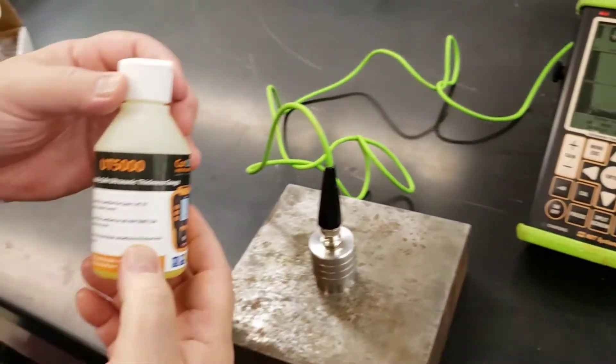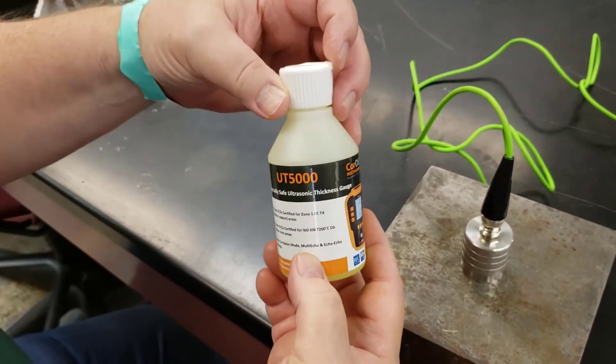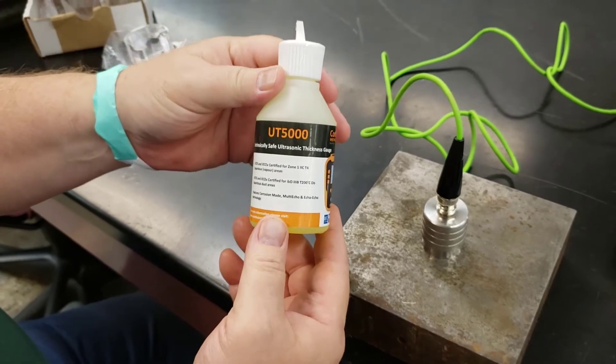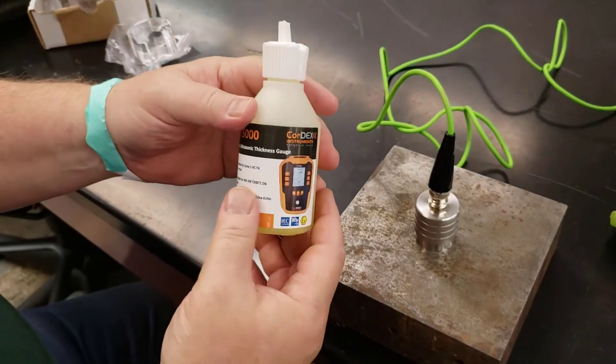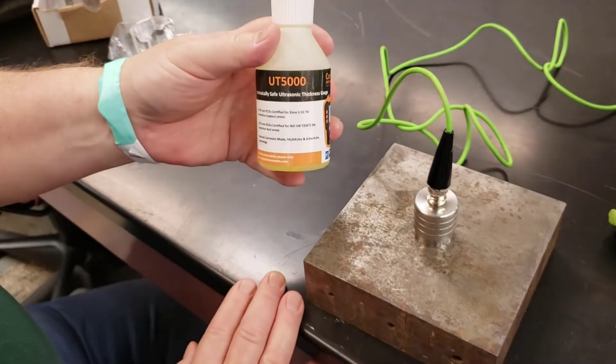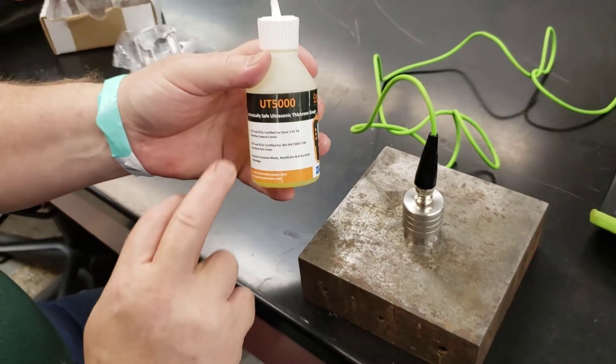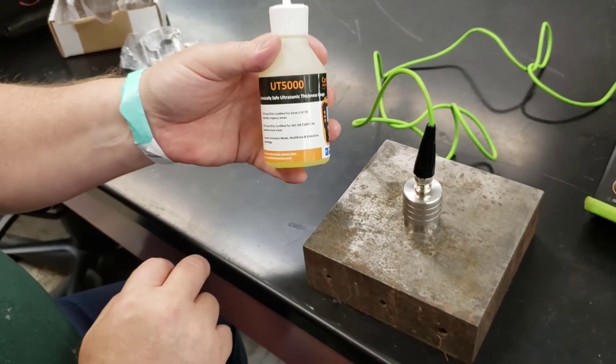We need to use some contact fluid. This can be as simple as Vaseline, but usually we use something a little bit better. If you've ever had an ultrasound in the hospital, it's this material, only a little more sterile. It just has some alcohol in it.